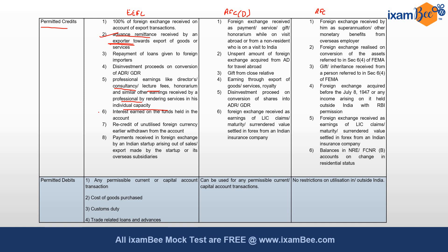The fifth permitted credit to the EEFC account is professional earnings like director's fees, consultancy, lecture fees, honorarium, and similar earnings received by a professional rendering services in an individual capacity. The sixth is interest earned on funds held in the account. The seventh is re-credit of unutilized foreign currency earlier withdrawn from the account. The eighth is payments received in foreign exchange by an Indian startup from sales or exports made by the startup or its overseas subsidiaries.